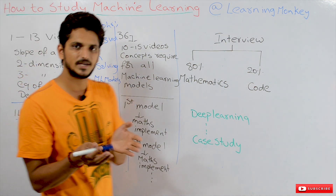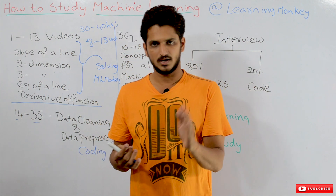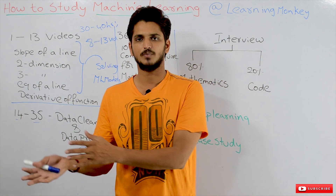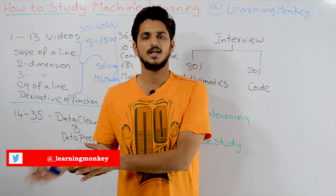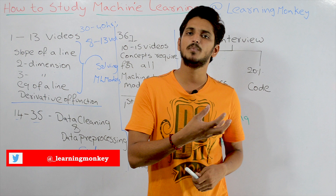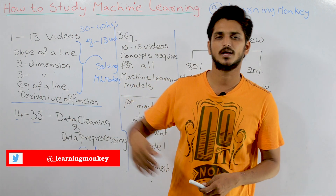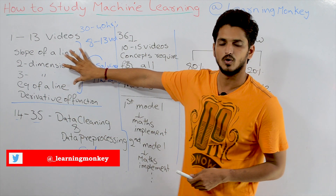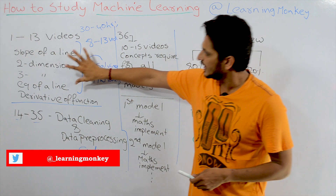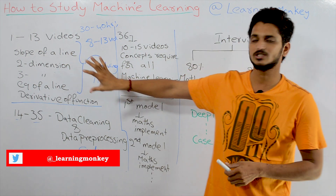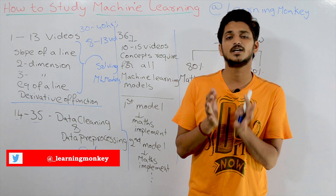Then we go to our first model — teaching the mathematics and then the implementation. Then the second model, then the third model, and so on, until we complete all of machine learning and move on to deep learning. The mathematics required for deep learning and neural networks is also based on these same foundational concepts, which is why you must concentrate on the first 13 videos.